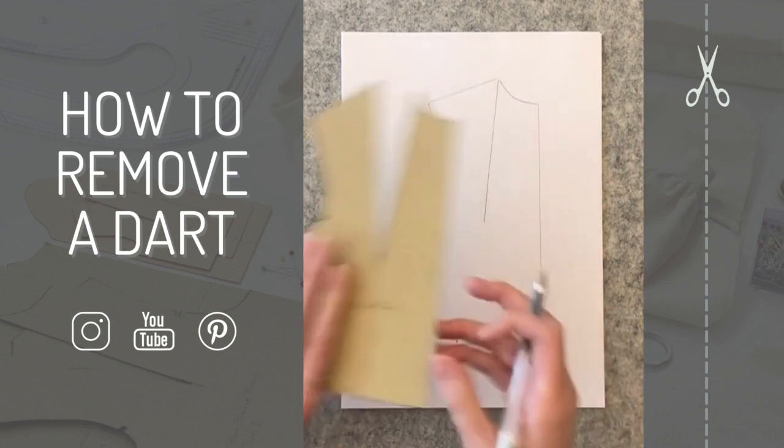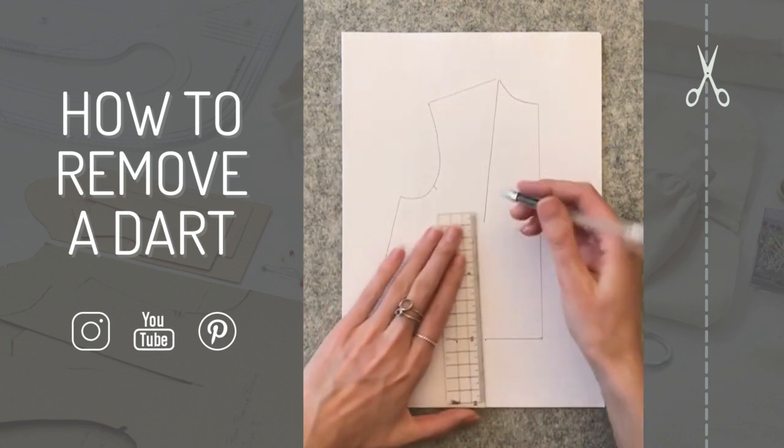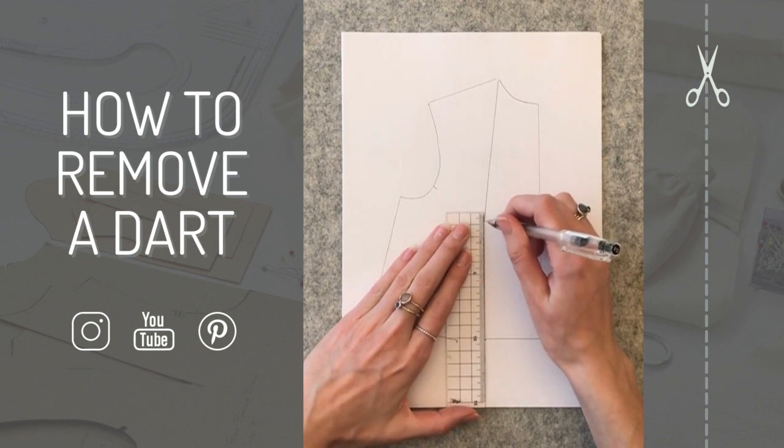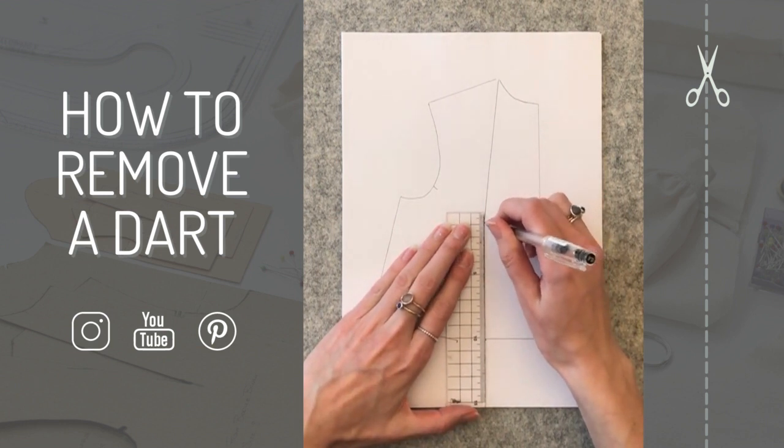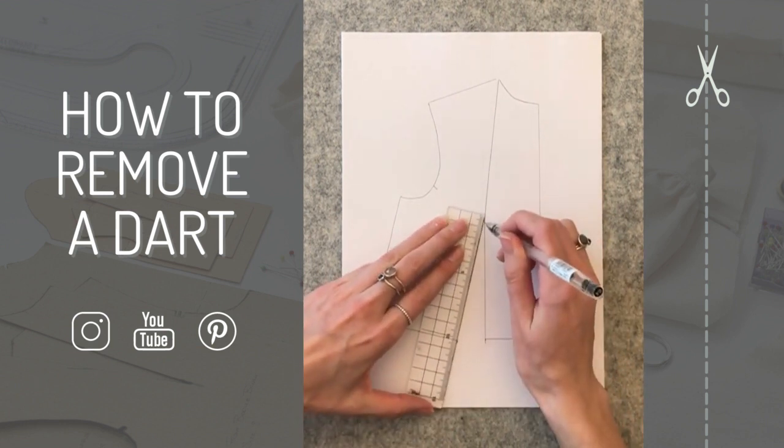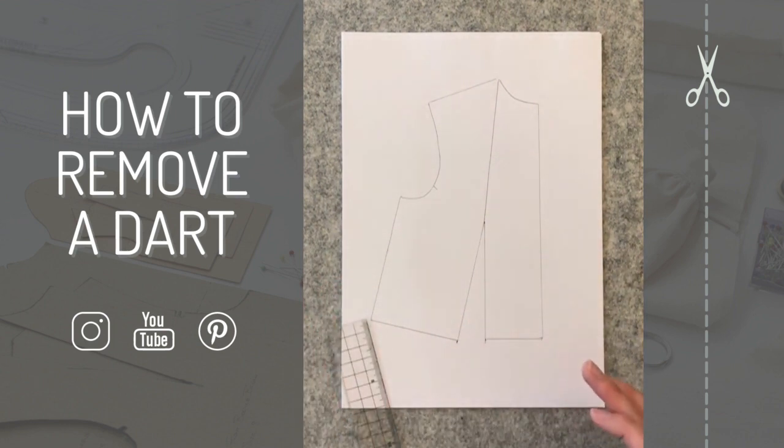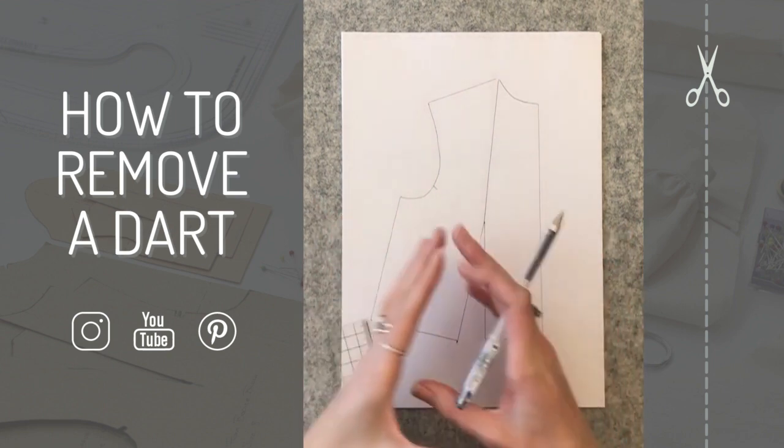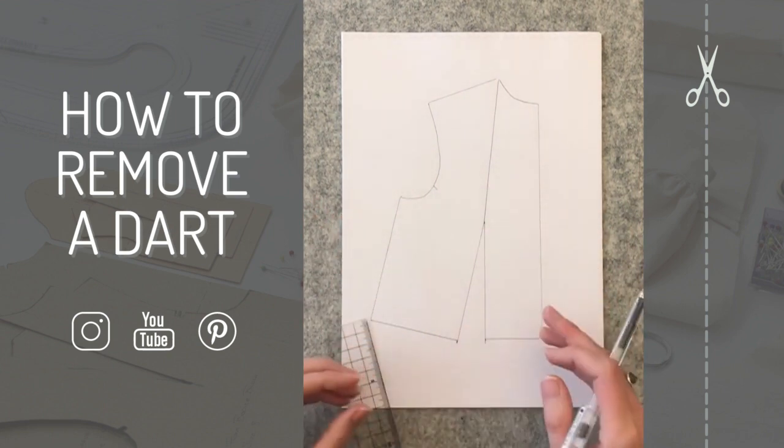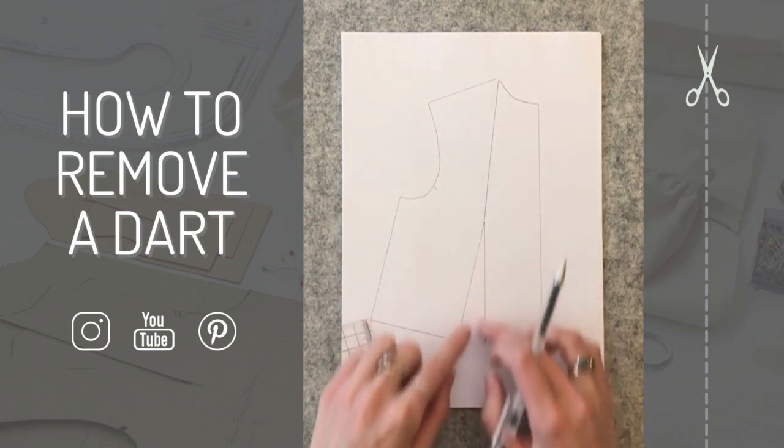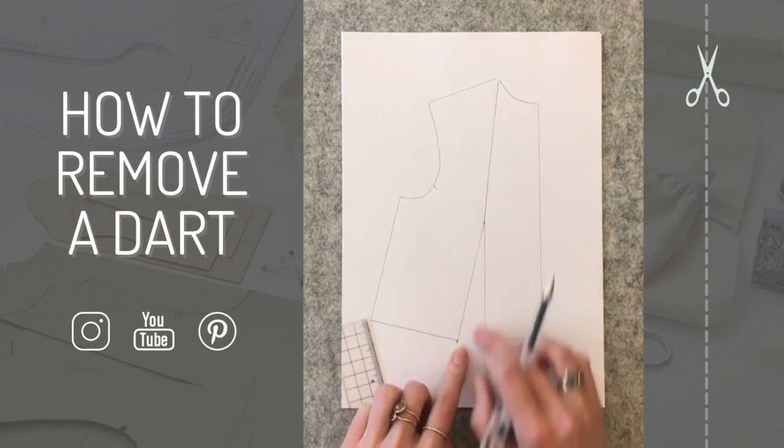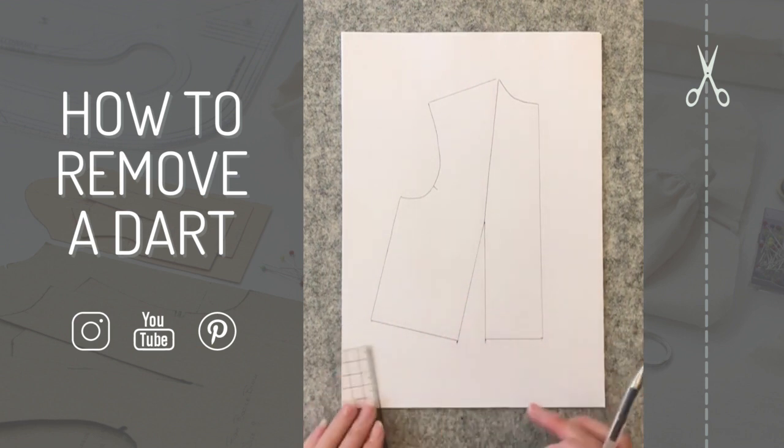Then I want to join that up and move this dart into a different area so we can increase the amount of fabric overall but remove the dart. At the moment, all we've done is moved it down to this area here because we still have this gap, so there's still a dart in this pattern.